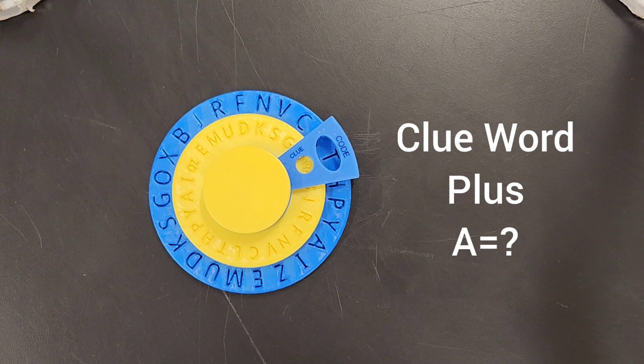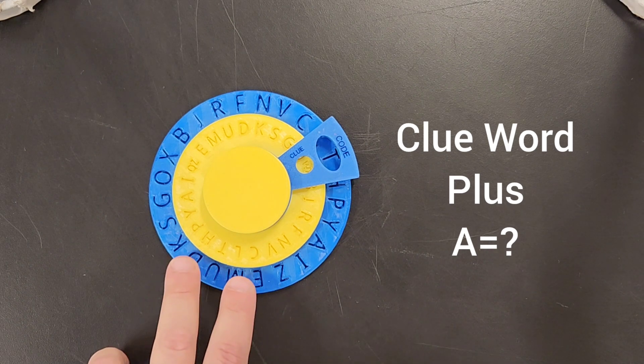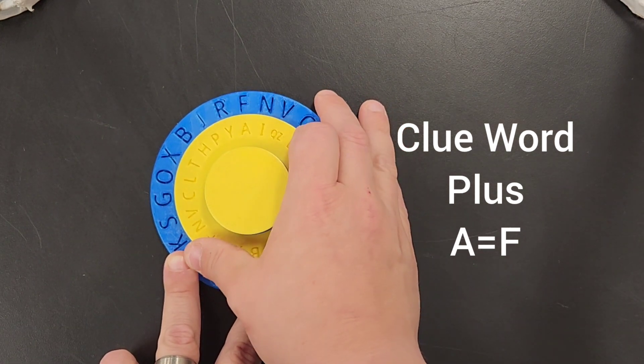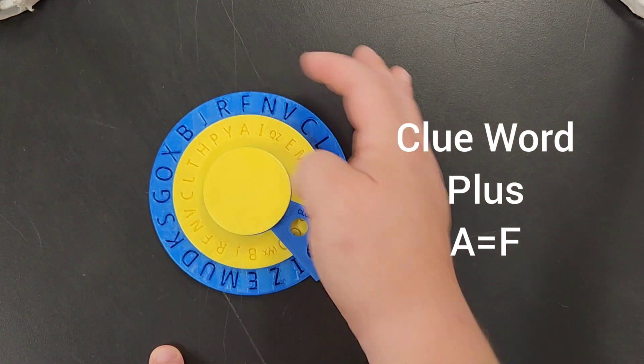So let's say that A equals F. Okay, so the first thing I'm going to do, I'm going to say A, I'm going to change that to F. See how A and F are right here.